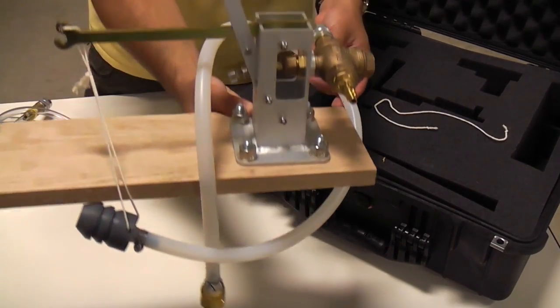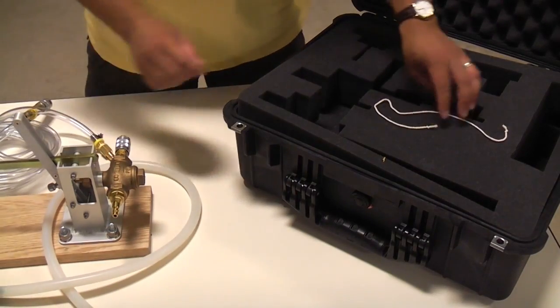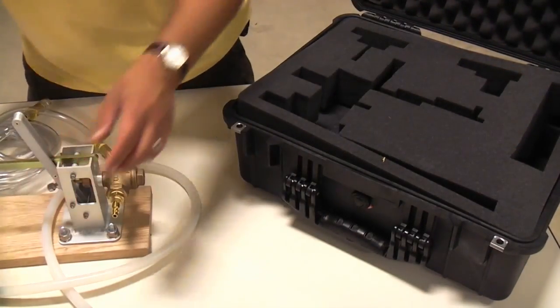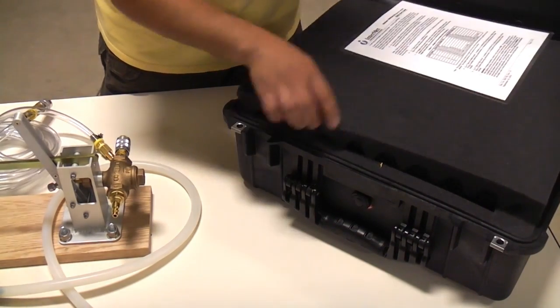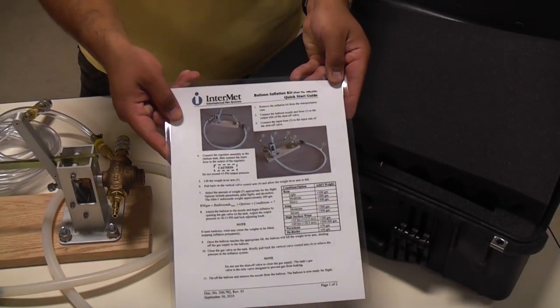You'll also find weights, the valve assembly, a 16 inch piece of string, and under the top lid of the case you will find the quick start guide.